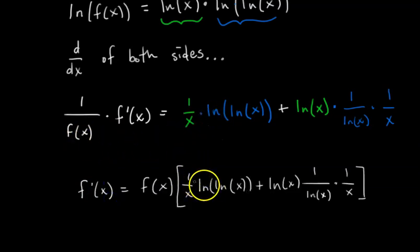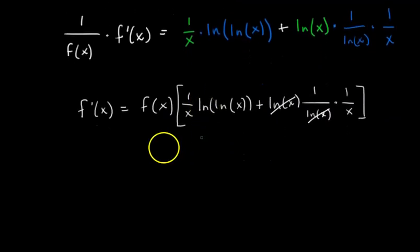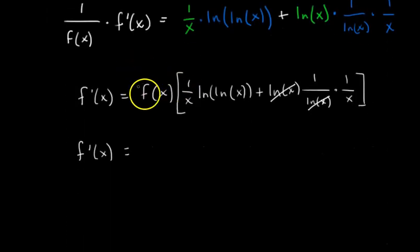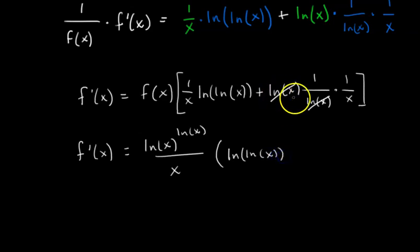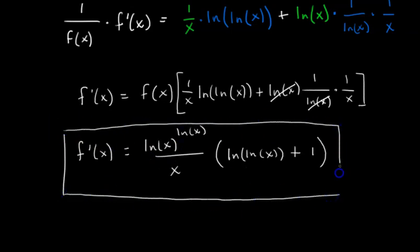The last step is to multiply both sides by f of x. Now all that's left is some simplification and plugging in what f of x actually is. This ln of x cancels with this ln of x, and I can factor out a 1 over x. So we have our final answer: f prime of x equals f of x — which is ln of x to the ln of x — divided by x, multiplied by whatever's left after factoring out the 1 over x, which is ln of ln of x, plus 1. This is much more complicated than g prime of x, and this is f prime of x.